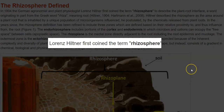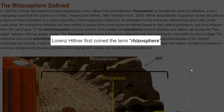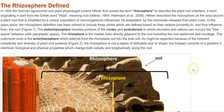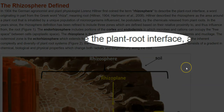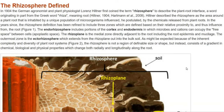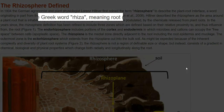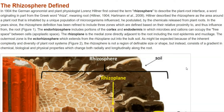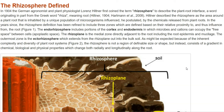The term rhizosphere was first coined by Lorenz Hiltner. It displays about the plant root interface. This word is basically originating from the Greek word 'rhiza' meaning root. Hiltner described the rhizosphere as an area around a plant root that is inhabited by a unique population of microorganisms, which are influenced by the chemicals released from the plant roots.